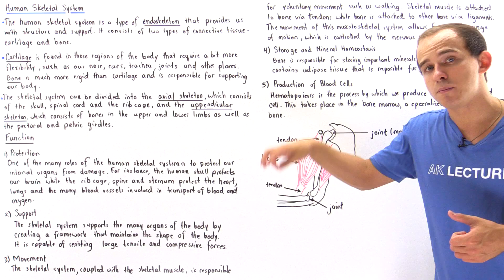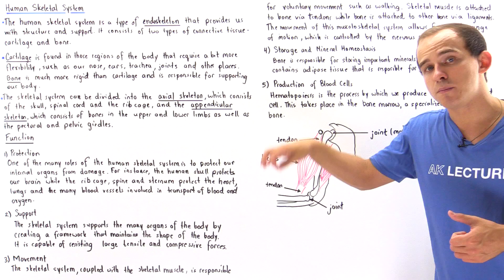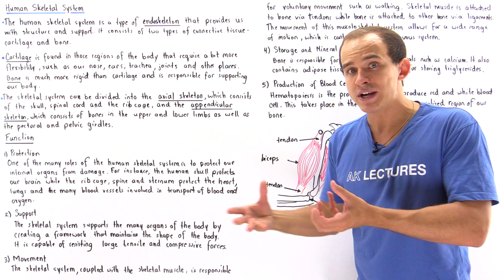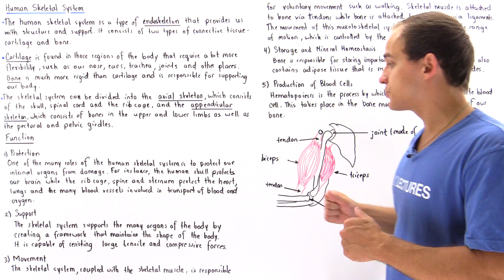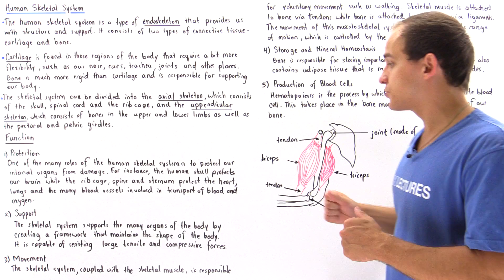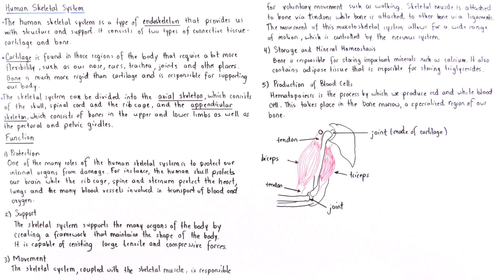In fact, our skeletal muscles are connected to bones via filaments known as our tendons, and bones are connected to other bones via filaments known as ligaments that also consist in certain regions of joints. These basically act to absorb some of that force, some of that shock. The skeletal system, coupled with the skeletal muscle and together known as the musculoskeletal system, is responsible for voluntary movements such as walking.